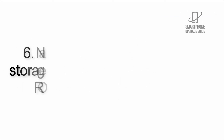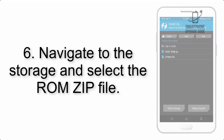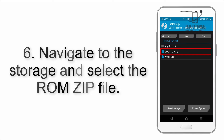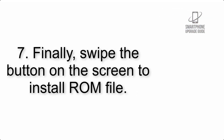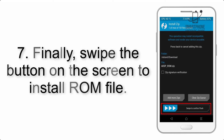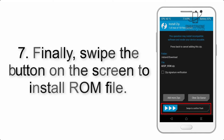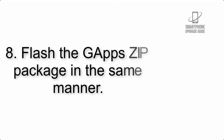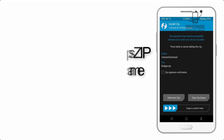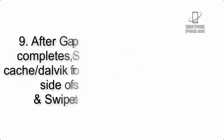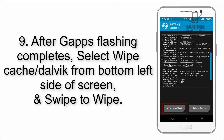Step 6: Navigate to the storage and select the ROM zip file. Step 7: Finally, swipe the button on the screen to install the ROM file. Step 8: Flash the GApps zip package in the same manner.